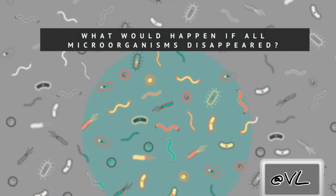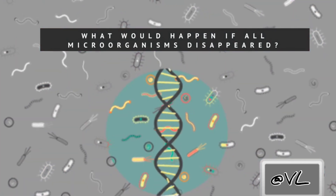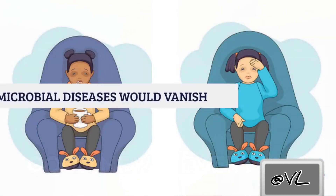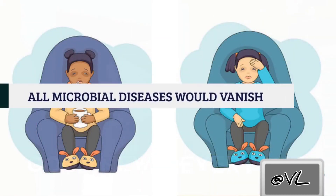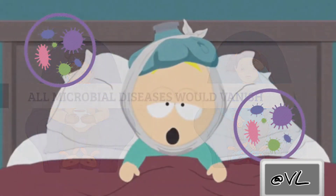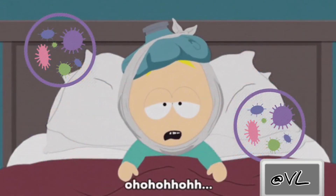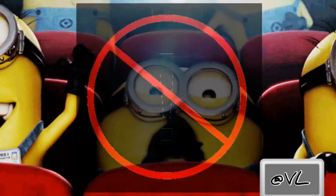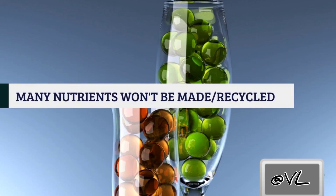What would happen if all microbes instantly vanished from our planet? Here's the good news: all microbial diseases would vanish. If all microbes were removed from Earth — viruses, bacteria, fungi, germs, or bugs — then naturally all infectious diseases would vanish. This may seem like the best thing to ever happen to humans, but it's not.